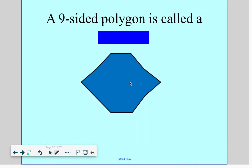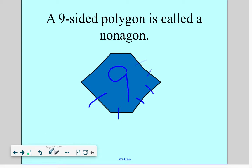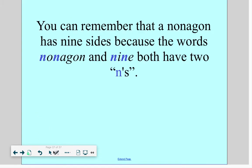A nine-sided shape is called a nonagon. The prefix nona means nine. Nona means nine. Let's count the sides. One, two, three, four, five, six, seven, eight, nine. Nine-sided shape is called a nonagon. When you look at the word nonagon, notice it has two ends in it just like the word nine has two ends in it. So your two ends should remind you of the number nine.